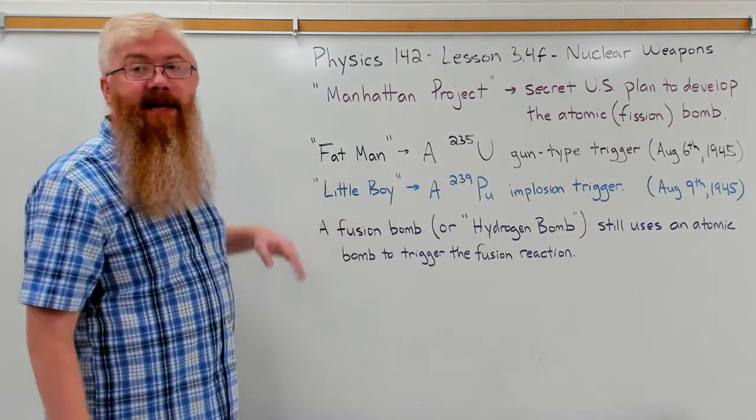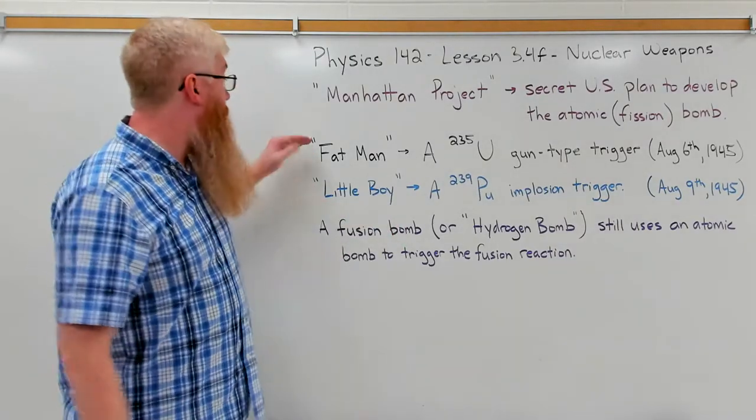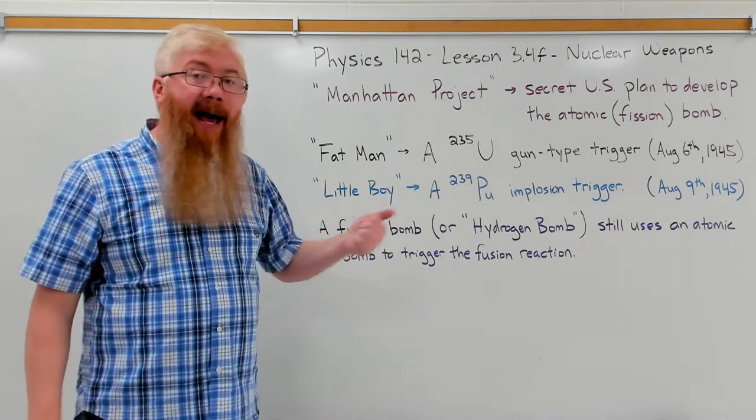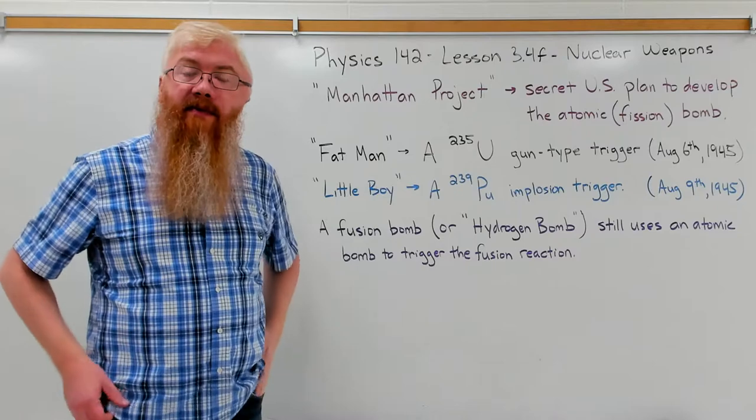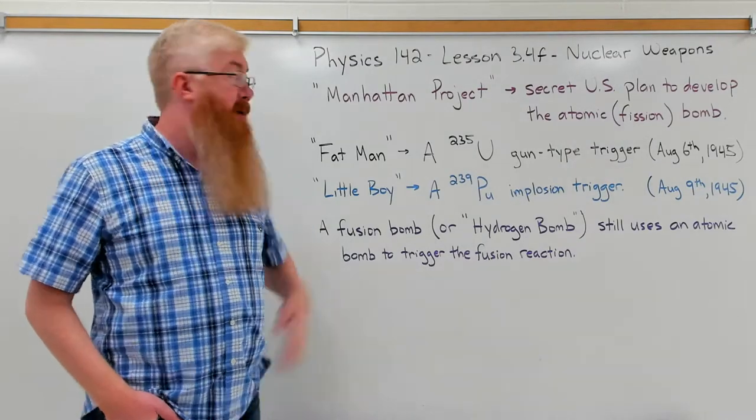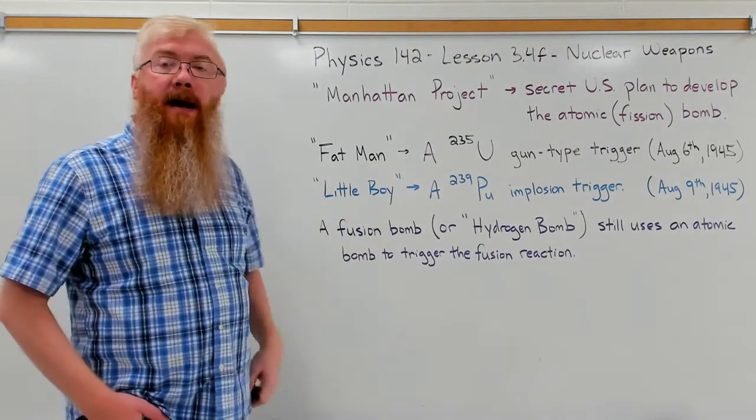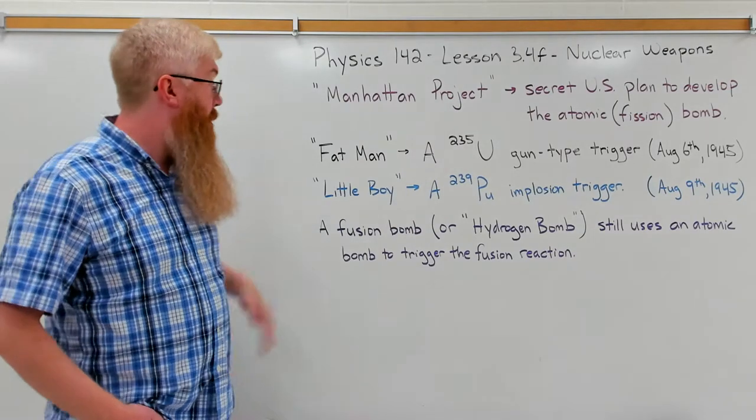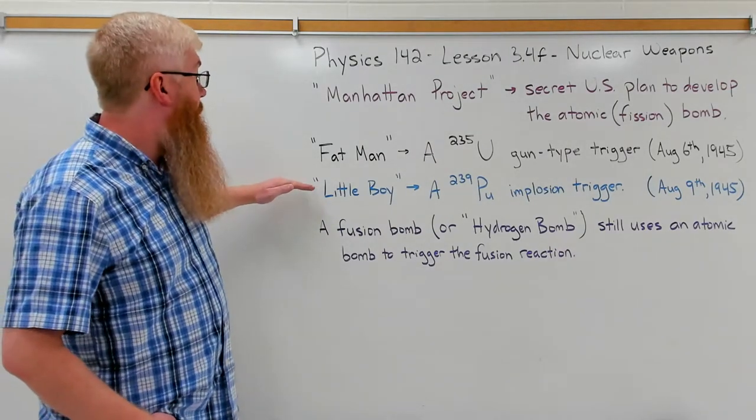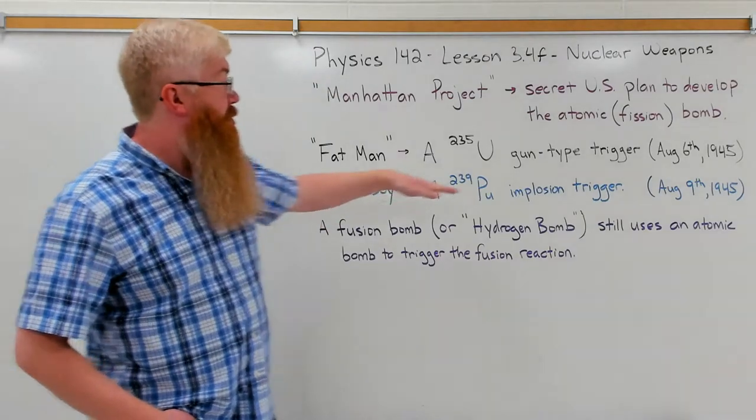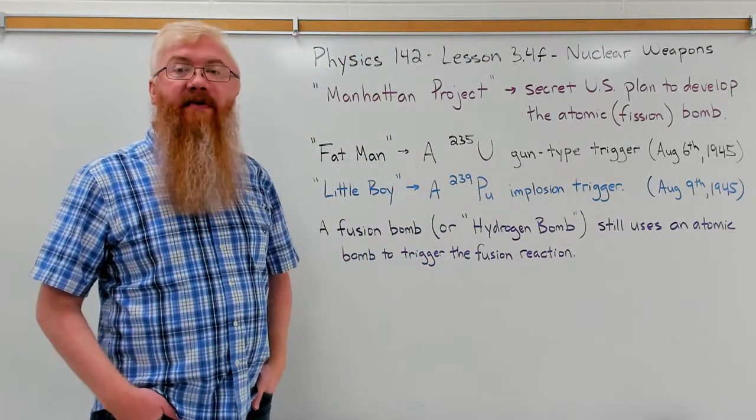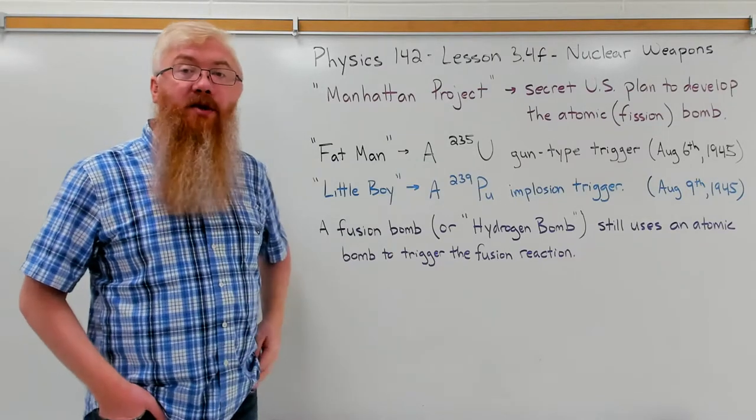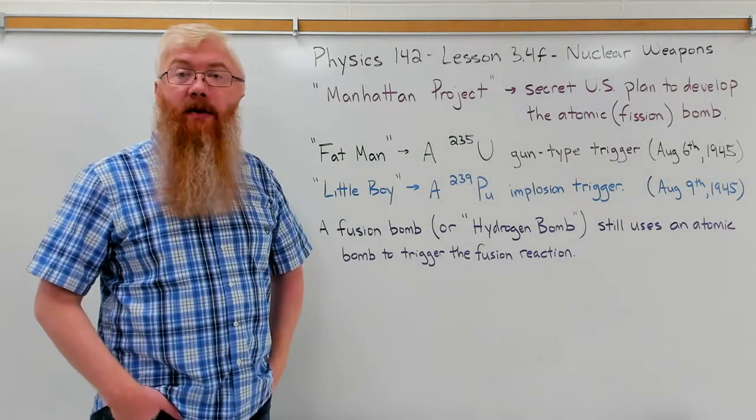So there was basically an experiment. They tested two different types of triggers. They weren't sure, right? They hadn't really played around much with these types of weapons. So they were testing, more than anything, how to build a nuclear bomb, or how to build an atomic bomb. Second one, Little Boy, was dropped on Nagasaki on August 9th, 1945. And those were actually the only two weapons developed by the U.S. at that point.